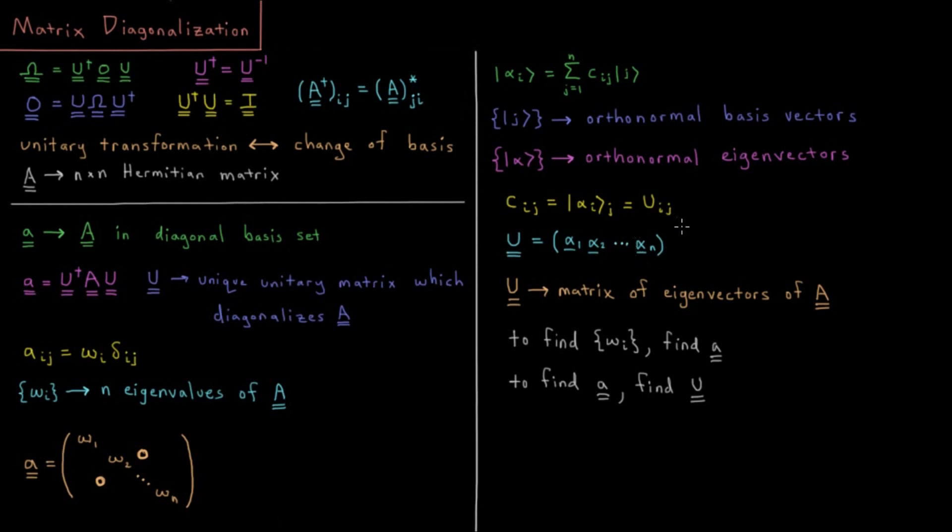And there will be n rows because each eigenvector has n elements. And then there are n eigenvectors, so there are n columns. That in its entirety gives you this unitary matrix.